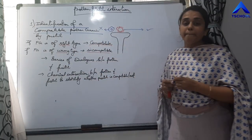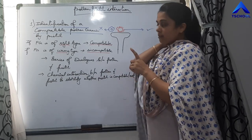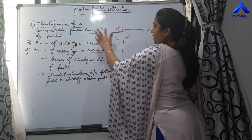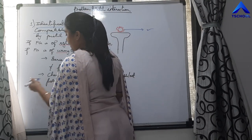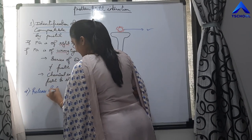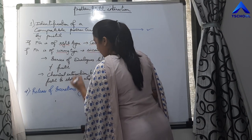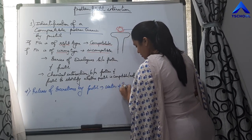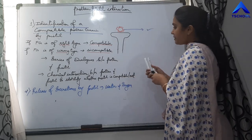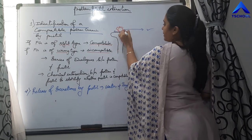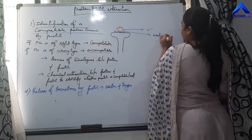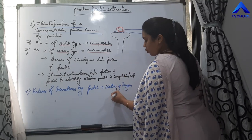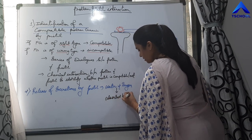Once a compatible pollen grain has been identified by the pistil, incompatible pollen grains are rejected. The next step is release of secretions by the pistil. The pistil releases secretions in terms of water and sugar, and these secretions are absorbed by the pollen grain.